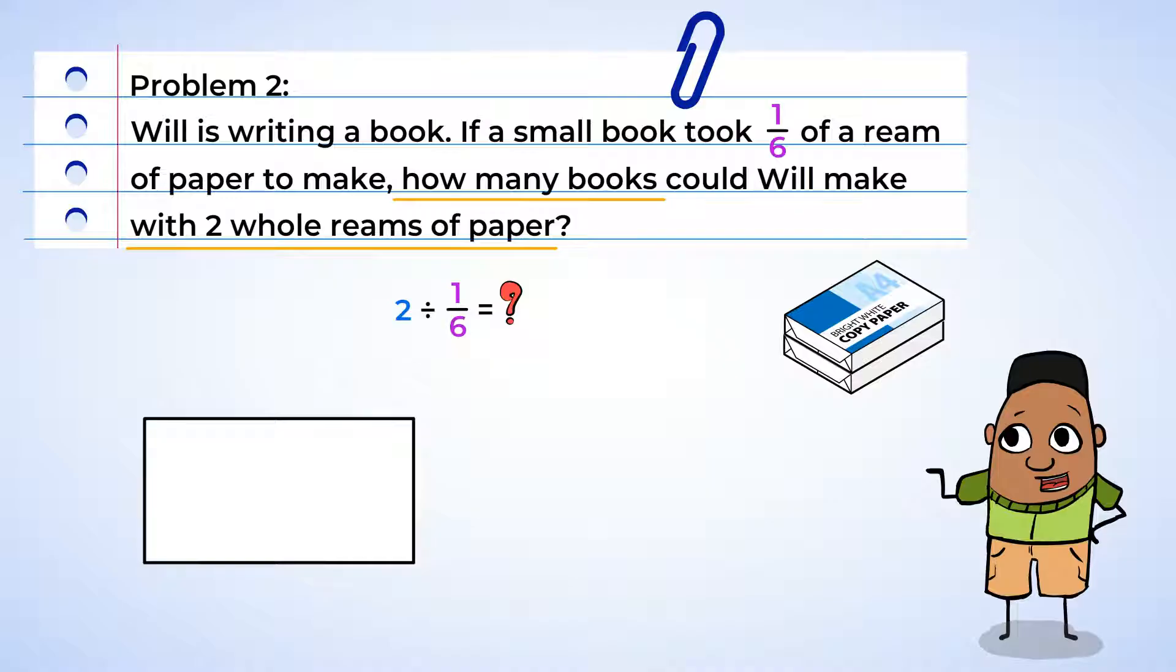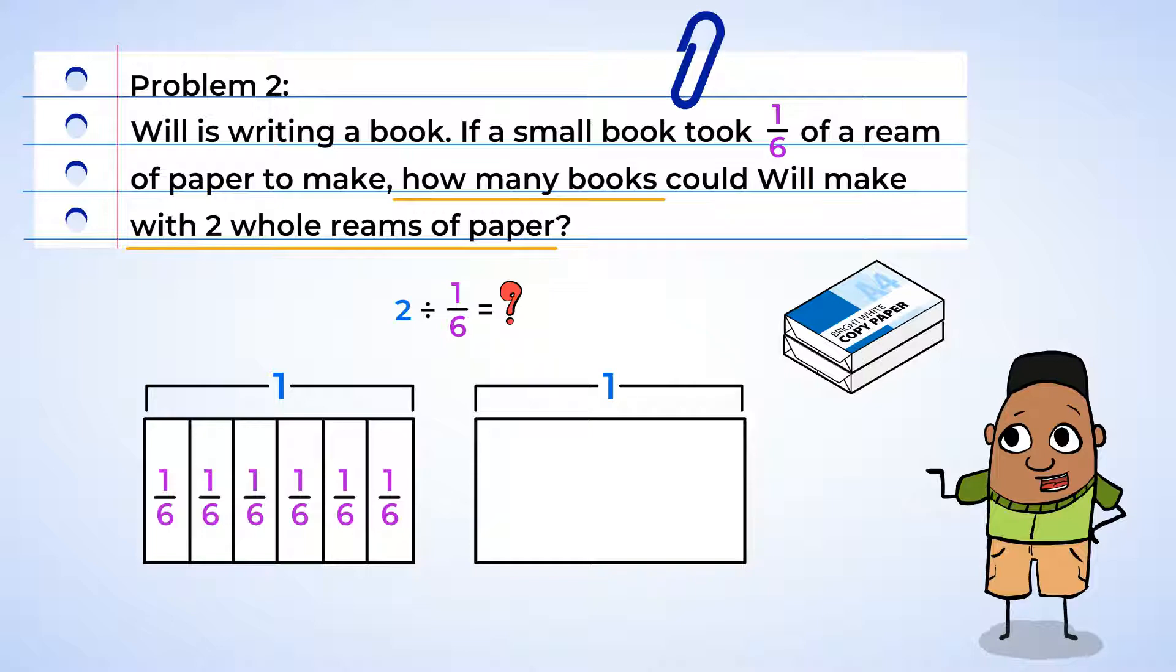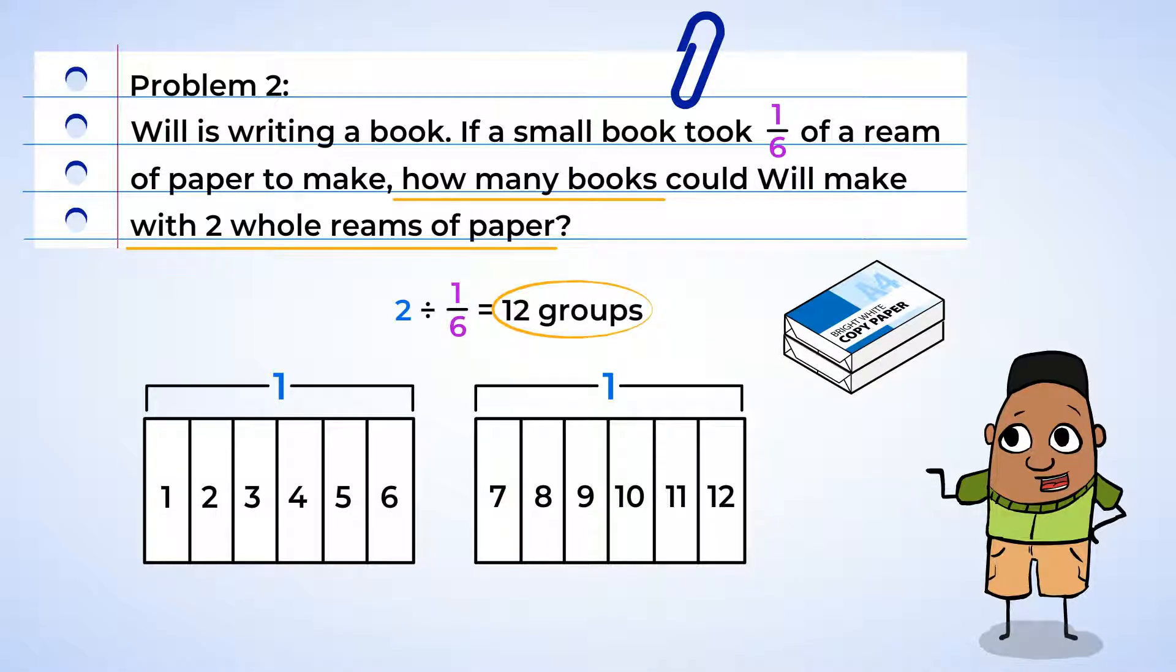All right, this rectangle here will represent one whole ream, and this rectangle, another whole ream. That is the total amount of paper we need to split to find out how many books Will can make. Now, we need to make groups of one-sixth for each book. So the first ream we can partition in six groups of one-sixth, and we can do the same for the other ream. And so, in total, we can make twelve groups of one-sixth. And this means that two divided by one-sixth equals twelve. So Will can make twelve books using the two reams of paper.